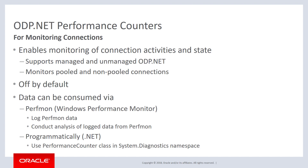ODP.NET has a number of counters available to it. These counters allow you to monitor things like connection activity and its state, as well as pooled and non-pooled connections. These counters are available for both managed as well as unmanaged ODP.NET.